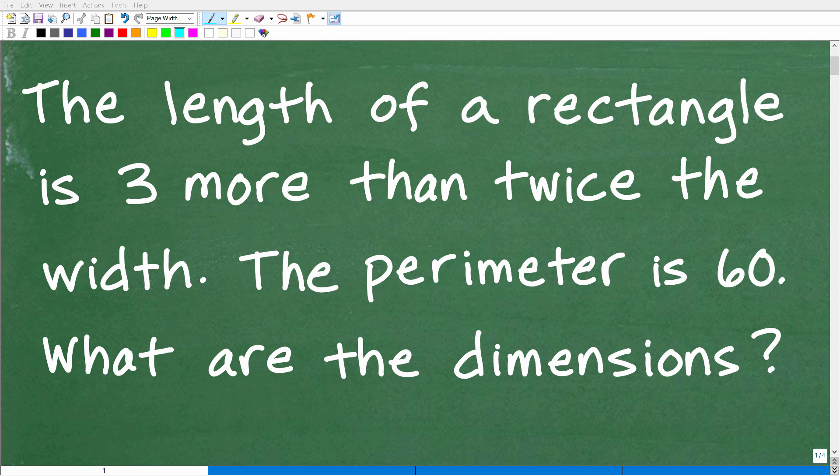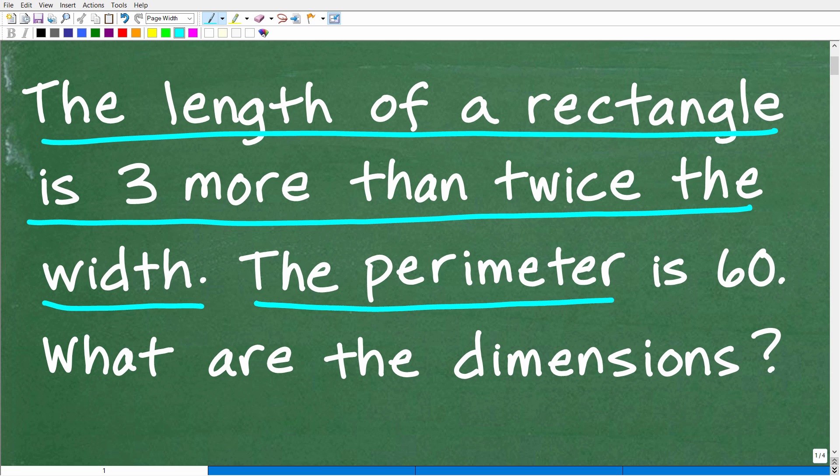Okay, so get ready to put your math skills to work to solve this interesting little math word problem. Let me go ahead and read the problem. The length of a rectangle is three more than twice the width. The perimeter of the rectangle is 60. What are the dimensions of the rectangle?